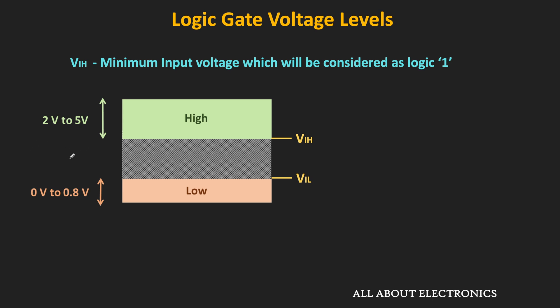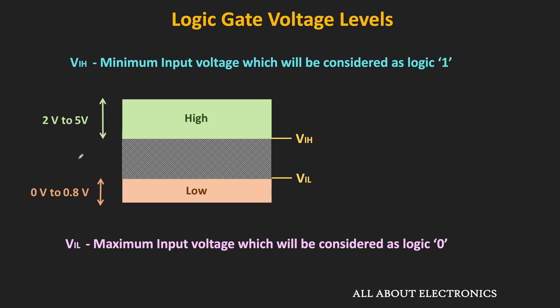Similarly, the second important voltage level is VIL. VIL is the maximum input voltage which will be considered as logic 0. So if the input voltage to the logic gate is beyond this voltage level, then it will not be considered as logic 0. For example, if the input voltage is more than 0.8V, then the logic gate will not consider it as logic 0. So these two voltage levels are very important parameters from the input perspective.